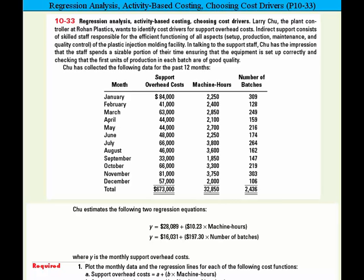Talking to the support staff, Chu has the impression that the staff spends a sizable portion of their time ensuring that the equipment is set up correctly and checking that the first units of production in each batch are of good quality. We have some data to the left: by month, for the past 12 months, he's jotted down the total support cost per month, the number of machine hours used, and the number of batches.